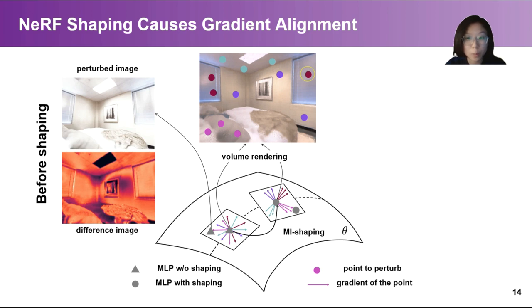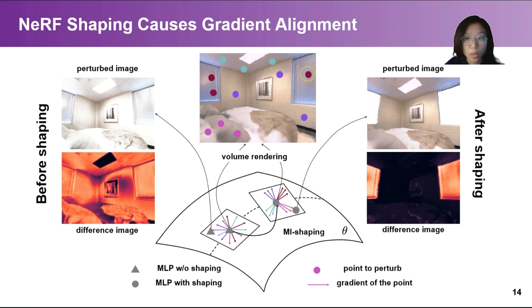Before shaping, the perturbed image has everywhere in the scene change, but after shaping, only other points on the windows change, showing semantically meaningful variations.